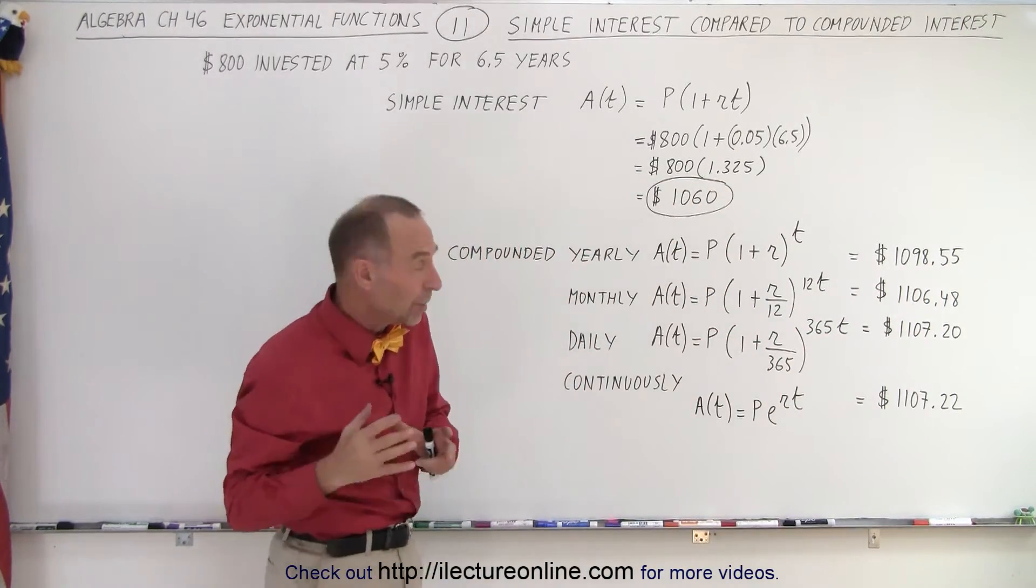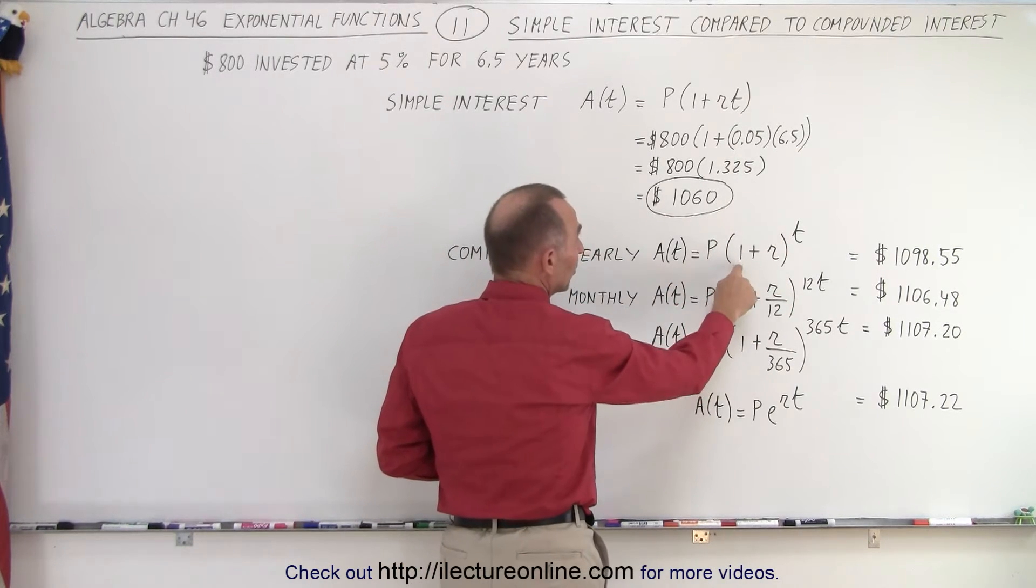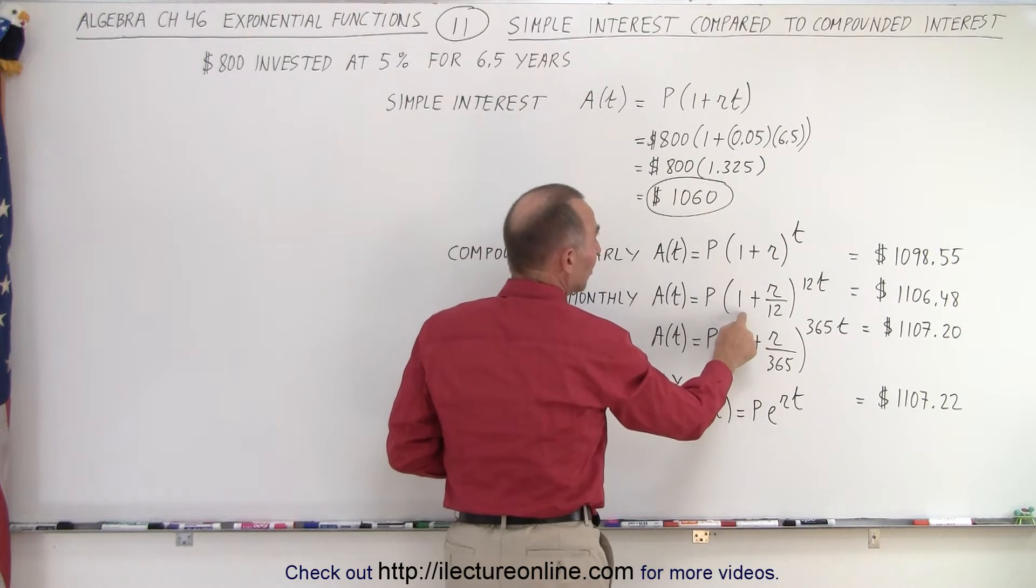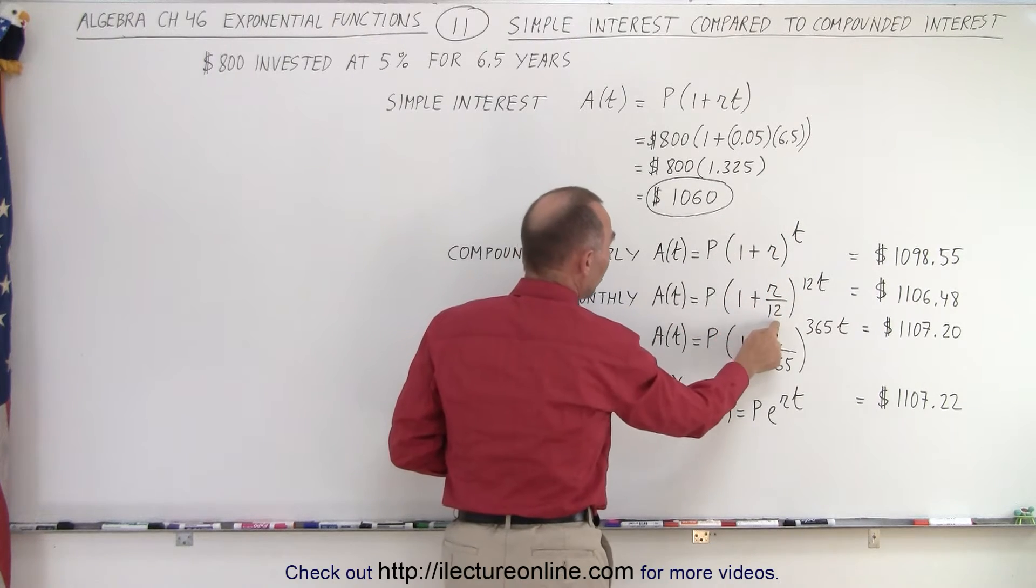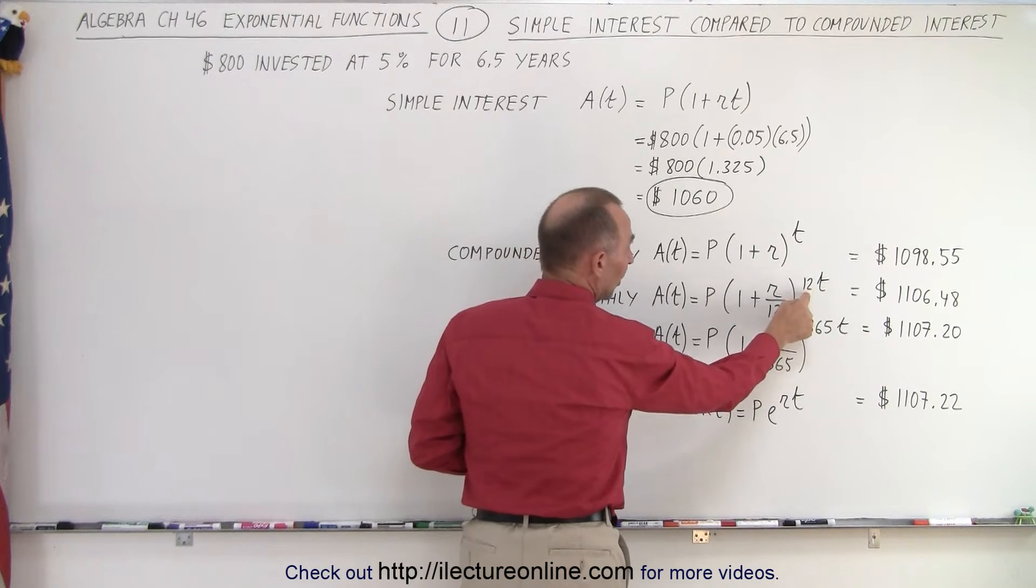But if instead you compound it monthly, notice how the equation changes. So here you have 1 plus r to the t power, but here you get 1 plus r divided by 12, because monthly means that we have 12 conversions, raised to the 12 times t power.